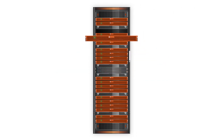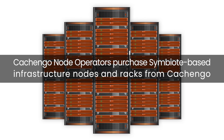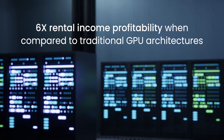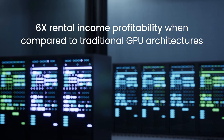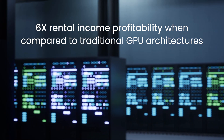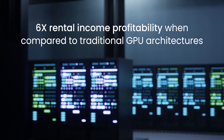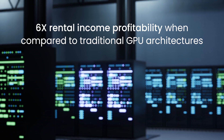Here's how it works. First, Kshango node operators purchase symbiote-based infrastructure nodes and racks from Kshango. This can provide them with six times as much rental income profitability when compared to traditional GPU architectures.